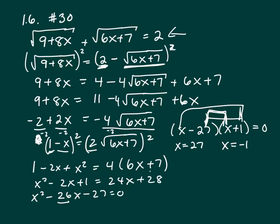So, we have 8 times 27. 8 times 27 is 216, plus 9 is 225. And the square root of 225 is 15, plus, plug a 27 in here. 6 times 27 is 162, plus 7 is 169. So, that's 13. Does 15 plus 13 equal 2? Does that equal 2? No. So, throw that one out.